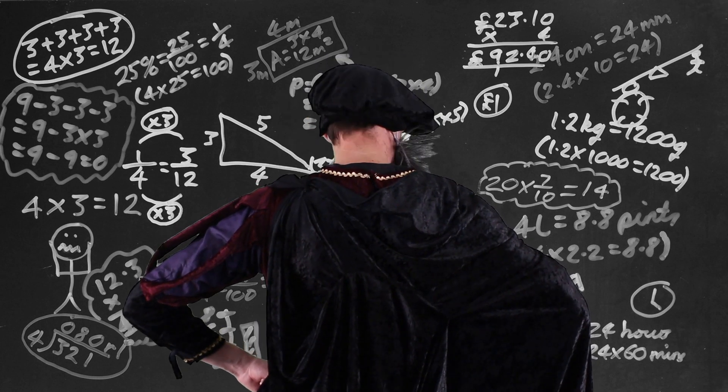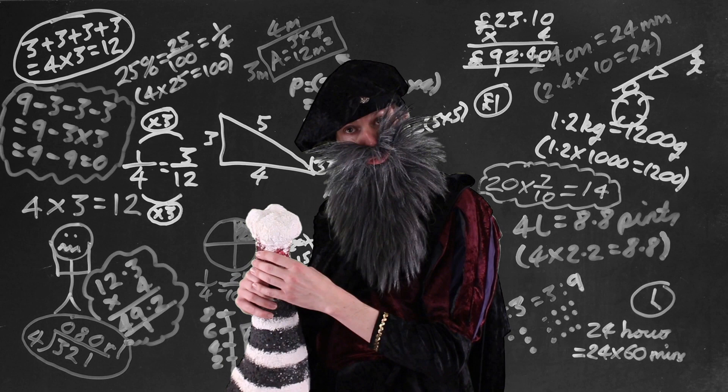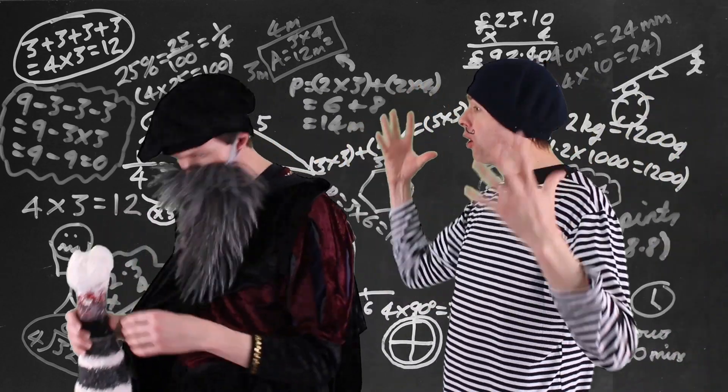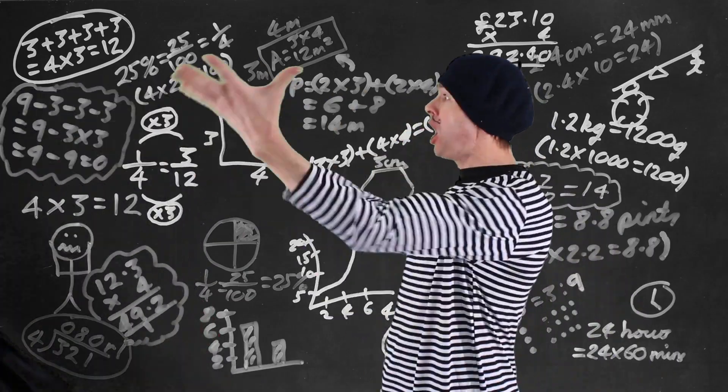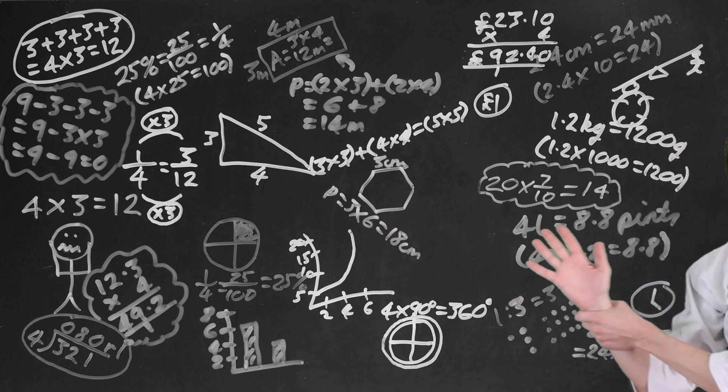The story starts in 1617 where a Scottish mathematician called John Napier invented a very clever method for calculating things really easily, and it was a system called Napier's bones. Not those kinds of bones, John. These kinds of bones. But John Napier got the idea from an Italian math book written all the way back in 1494. And to be fair the Italians probably nicked the idea from the Chinese long before that, and the Chinese probably nicked the idea from the Indians.